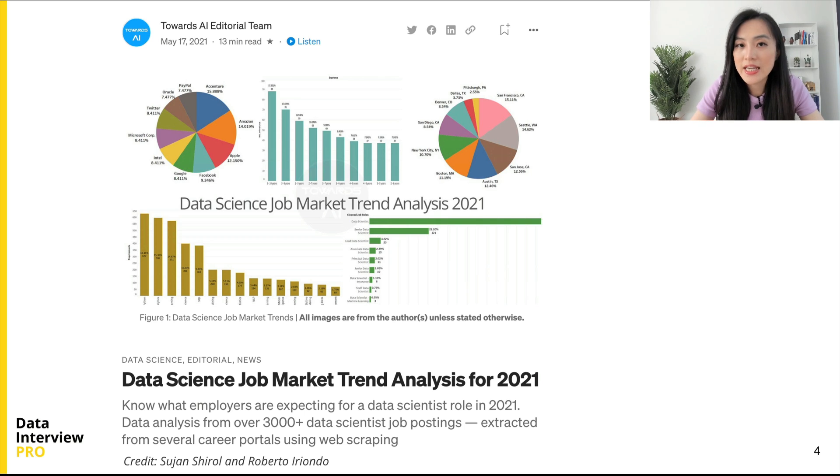Let's look at an example. In this article published on Towards AI, the authors did a very good job analyzing data science job market trend for 2021. They obtained job data from several career models and conducted descriptive statistics from over 3,000 data scientist job postings.